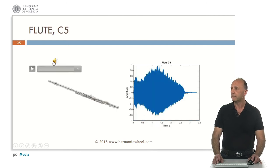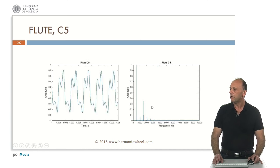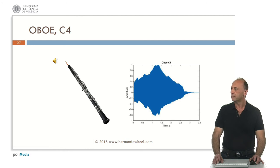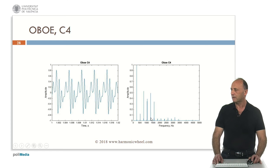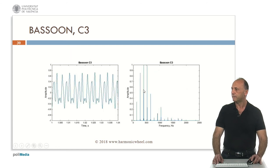Flute, C5. This is the waveform and the spectrum. The oboe, C4, which has a double reed. This is the waveform and the spectrum. The bassoon, also with a double reed. The envelope, waveform and the spectrum.